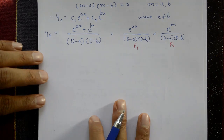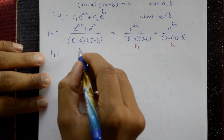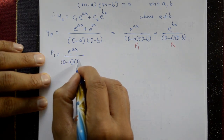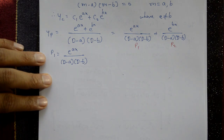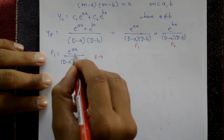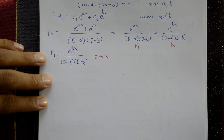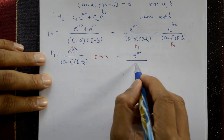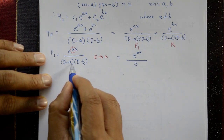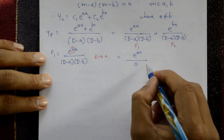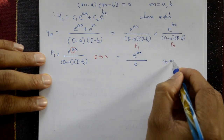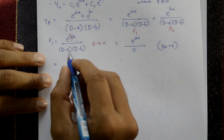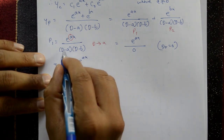Solving P₁: P₁ = e^(ax) / [(D-a)(D-b)]. Putting D = a gives denominator (a-a)(a-b) = 0, so the denominator is zero. Therefore multiply by x: x·e^(ax) / f'(D), and differentiate f(D) = (D-a)(D-b) by product rule to get f'(D).